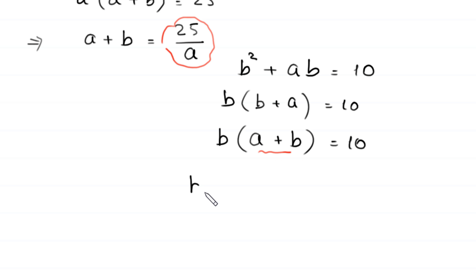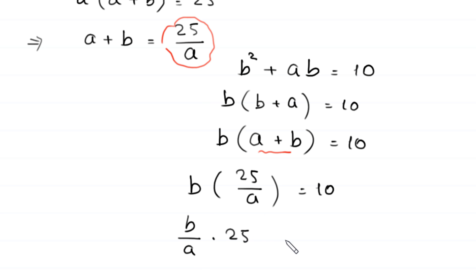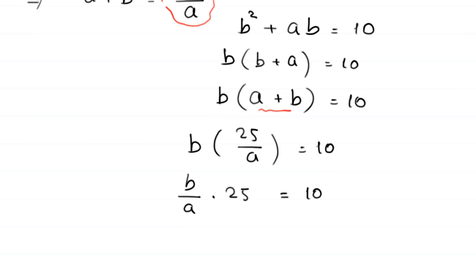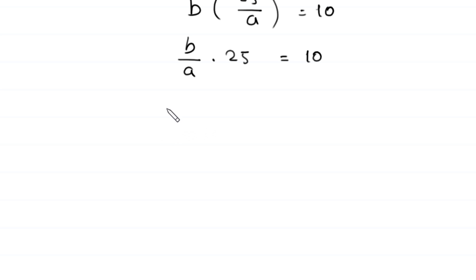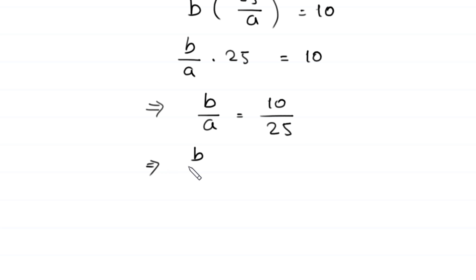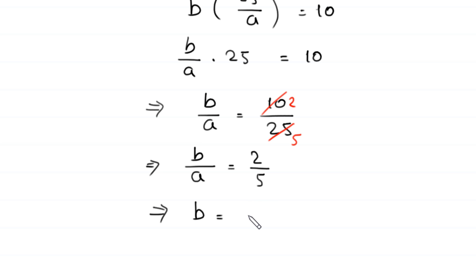So this equation will become b times 25 over a is equal to 10. This can be written as b over a times 25 is equal to 10. Dividing both sides by 25, this implies that b over a is equal to 10 over 25, which simplifies to 2 over 5. Multiplying both sides by a, this implies that b is equal to 2 over 5 times a.